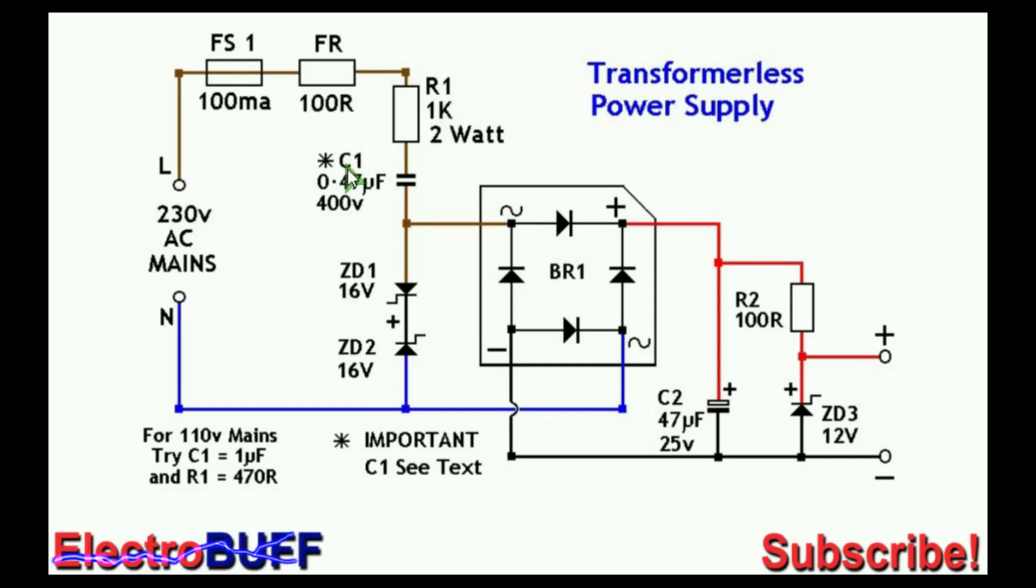The capacitor C1 basically acts as a voltage dropper and the voltage across these nodes will be dependent on the value of capacitor C1 and the frequency. The output current will also be dependent on capacitor C1.